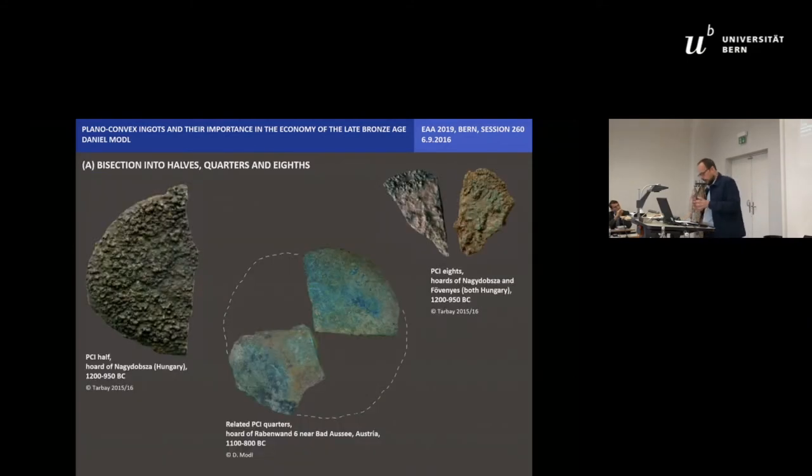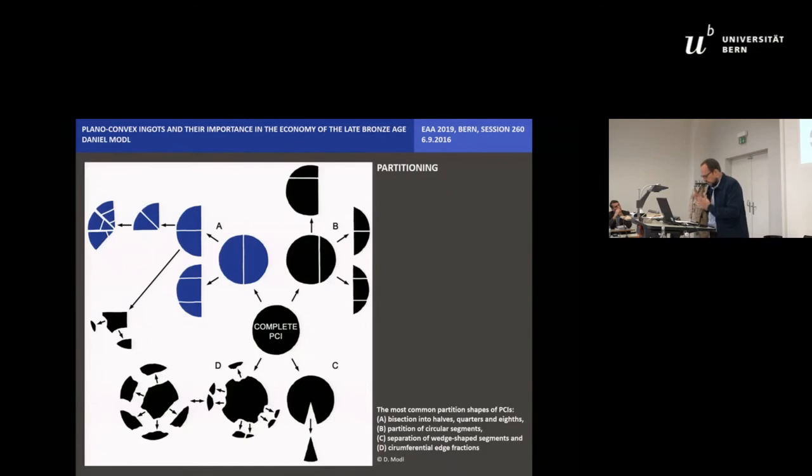Many of the round PCIs may have been partitioned according to the principle of a continuing bisection into halves, quarters and eighths. The quarter and eighth pieces were partly divided again resulting in triangular or trapezoid shaped pieces.